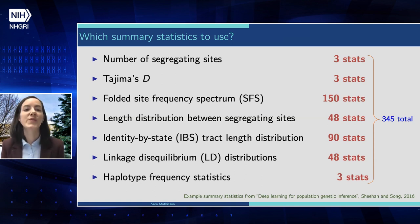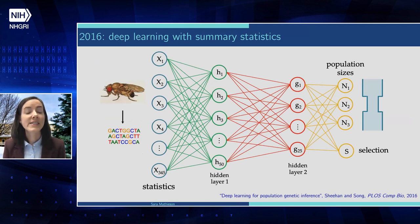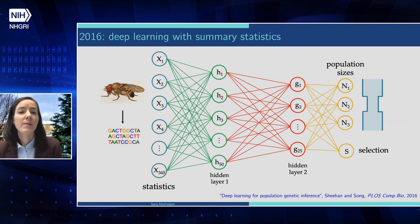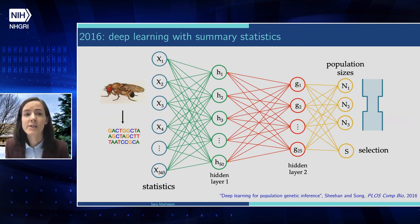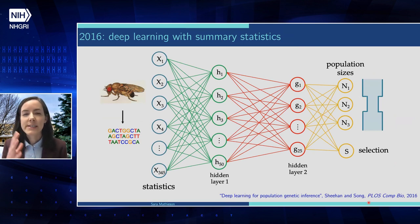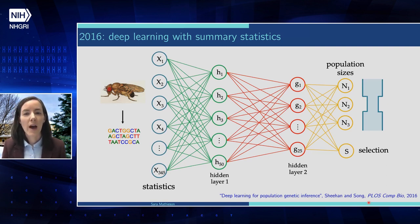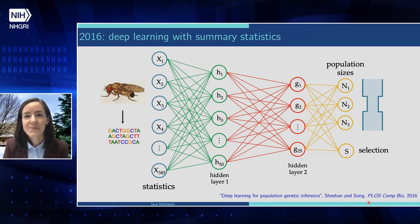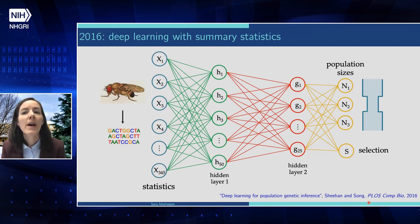One usage of machine learning is to identify important features or distill combinations of features useful for a problem of interest. What we decided to do was feed all of these summary statistics into a deep learning method. The 'deep' here just means multiple layers, to actually infer both selection and population size changes — represented here as a simple bottleneck model — jointly inferred along with natural selection. The idea was that this deep learning method could distill information within these summary statistics, creating groups of summary statistics that would be informative for these parameters. There was a lot of activity in machine learning around this time, but one drawback was that it still relied on these summary statistics.